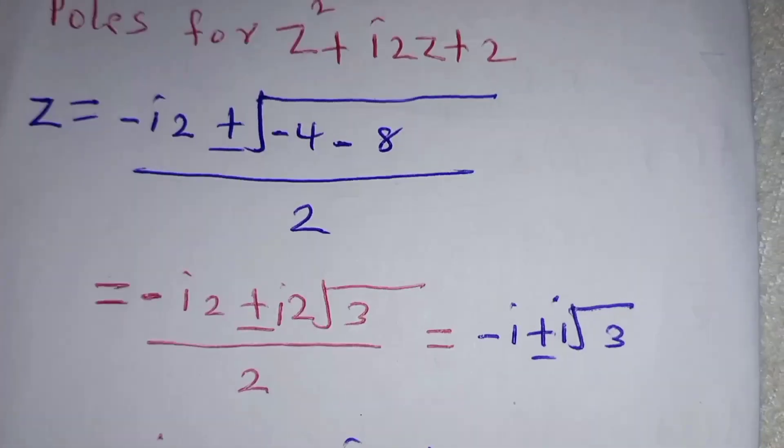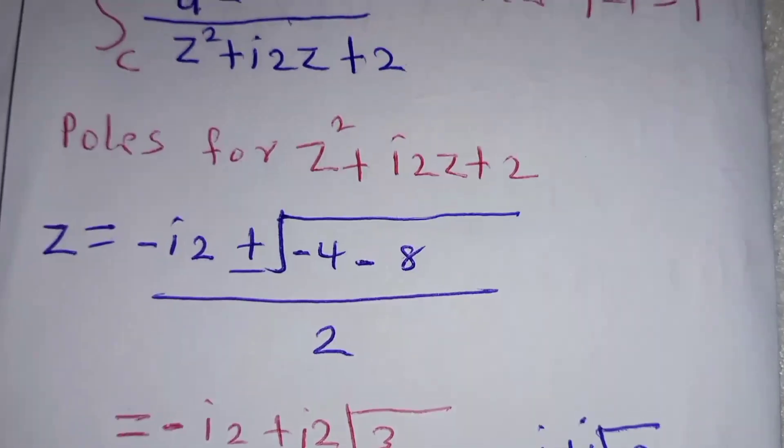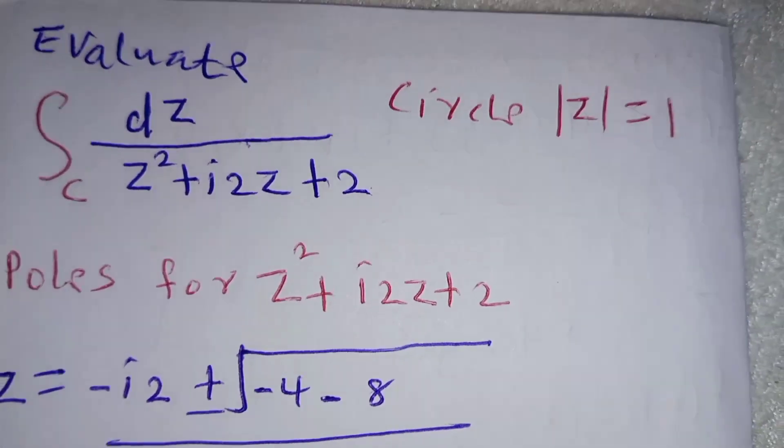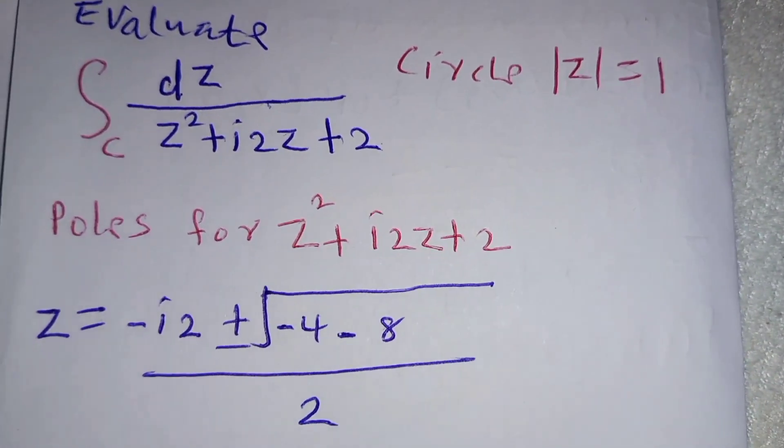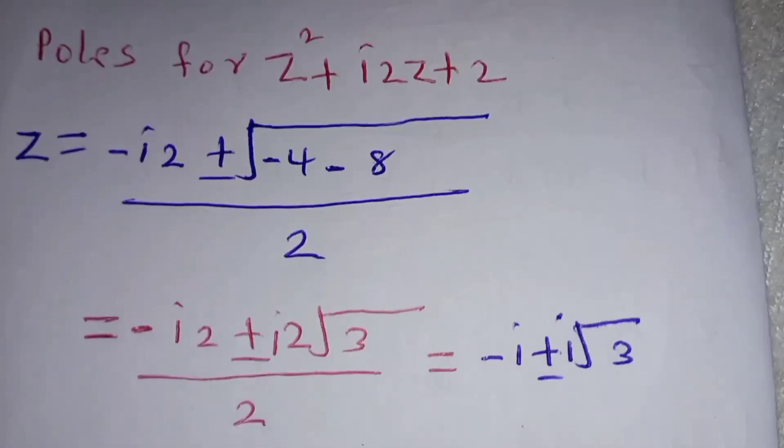Now this i and this i will cancel. You have i root 3 and i root 3, which will give you i2 root 3. Then from there, by Cauchy's residue integral theorem, the sum of the residues...